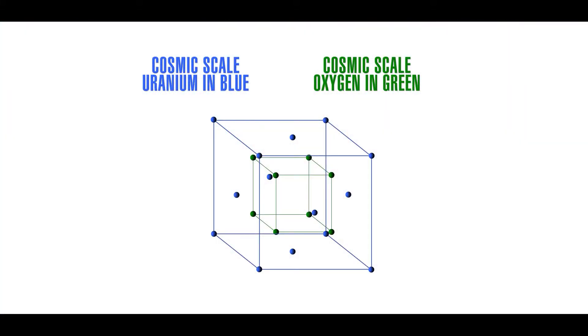Let us now examine this cosmic scale uranium dioxide crystal lattice. Uranium dioxide crystal system is cubic, with a fluorite crystal packing structure. The outer blue cube locates the position of 14 cosmic scale uranium atoms, centered on the blue spheres. Eight are at the cube corners, with six at the cube face centers.